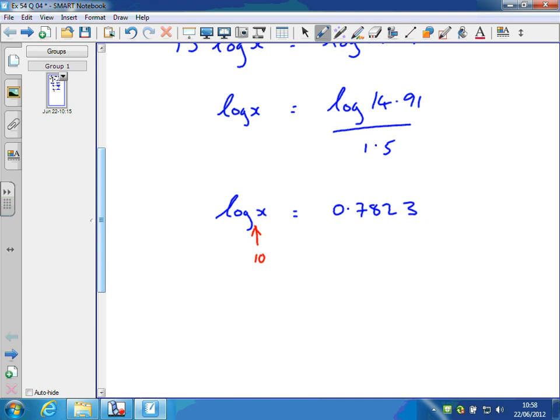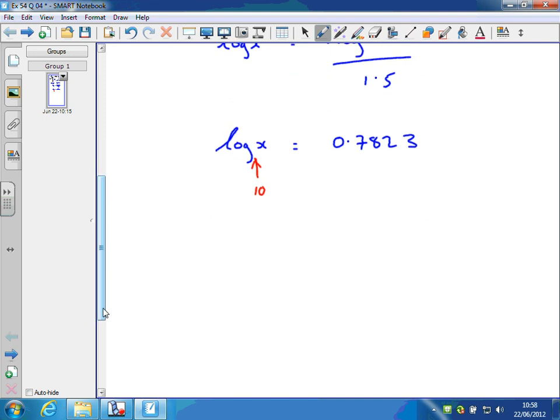What does this mean? It means that x is the power to which 10 has to be raised to get 0.783. So 10 to the power of 0.7823 will give us x.